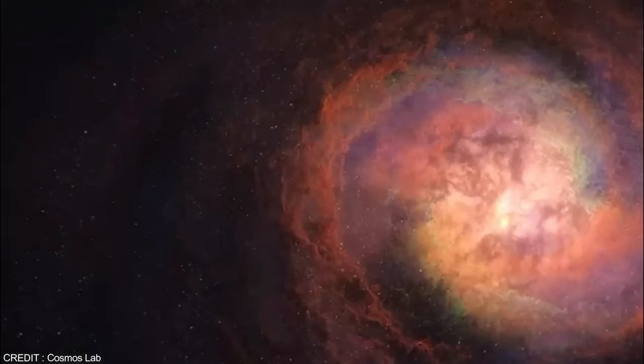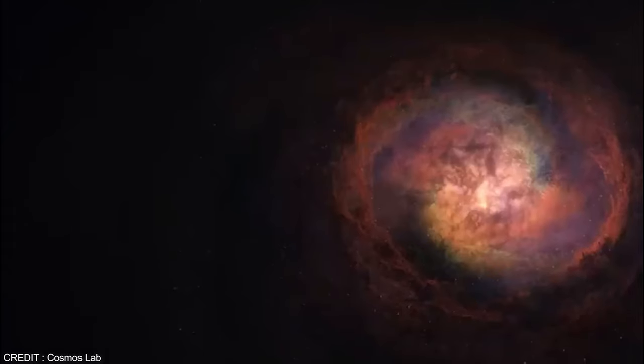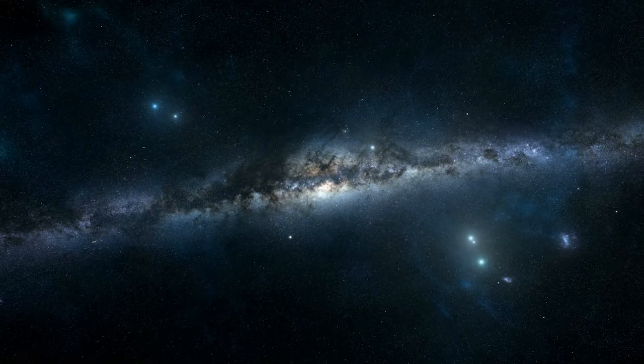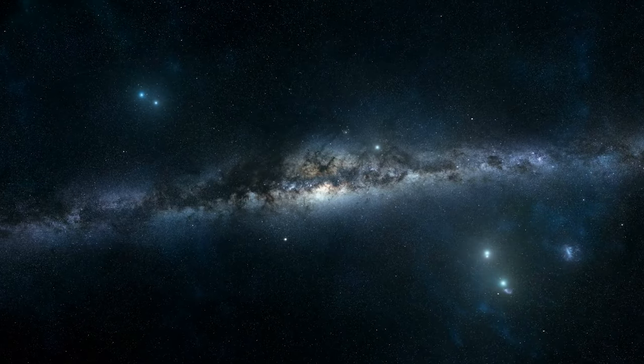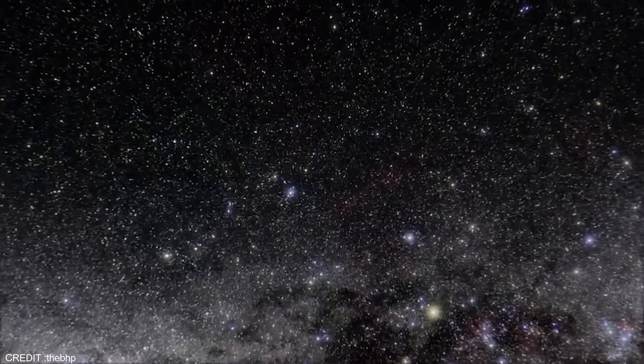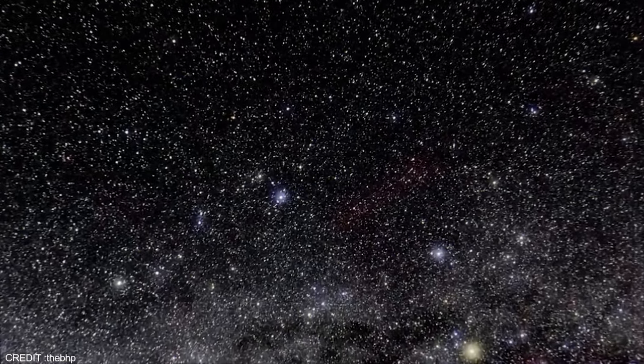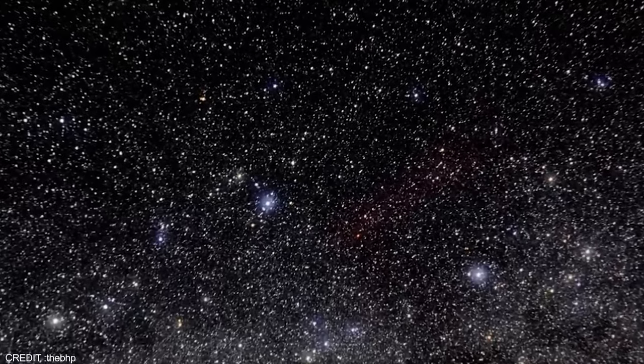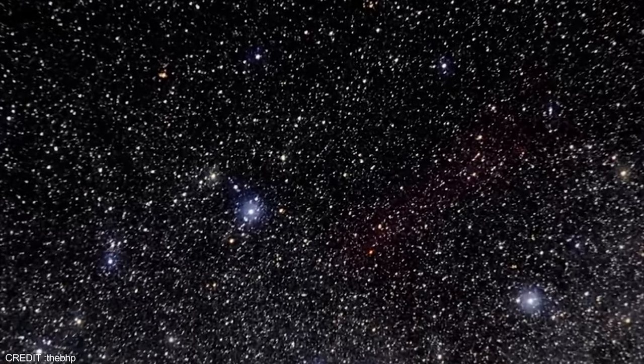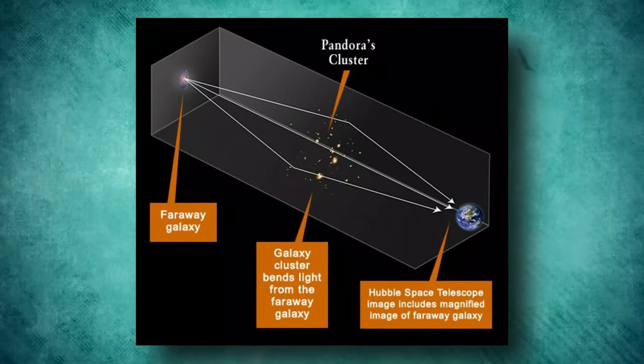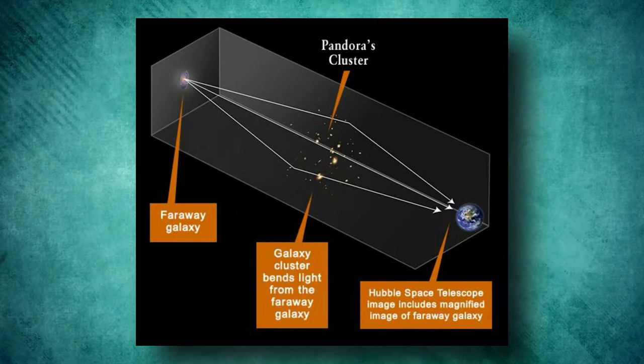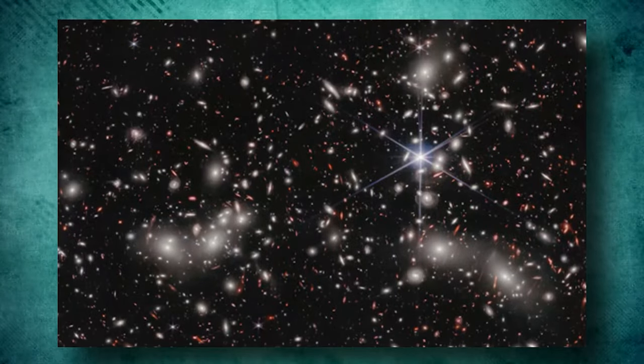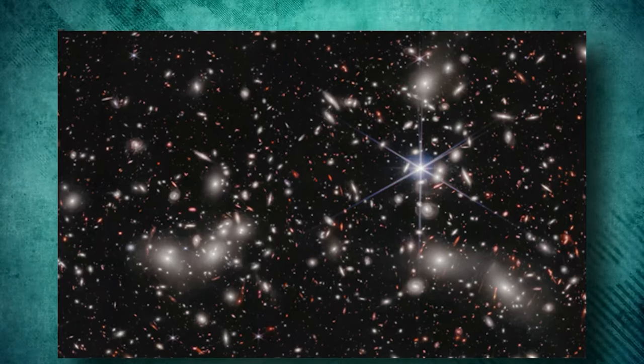The James Webb Space Telescope has opened a window to the very edge of the universe, unveiling an incredible new image of distant galaxies that stretches back to the beginning. The image covers only two percent of the sky but reveals thousands of galaxies, some much fainter than the naked eye can detect. The JWST captured the image using its near-cam instrument, which captured eight different colors of near-infrared light.